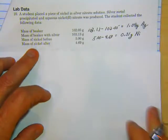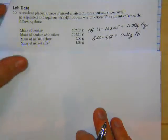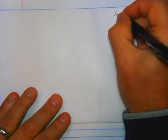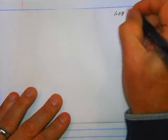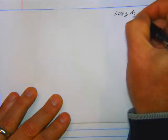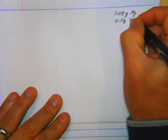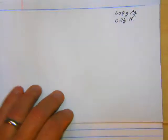From there, let's go ahead and do the problem. We'll get a piece of paper out here and write up on the top what we had from the previous one. We had 1.08 grams of silver and 0.31 grams of nickel.